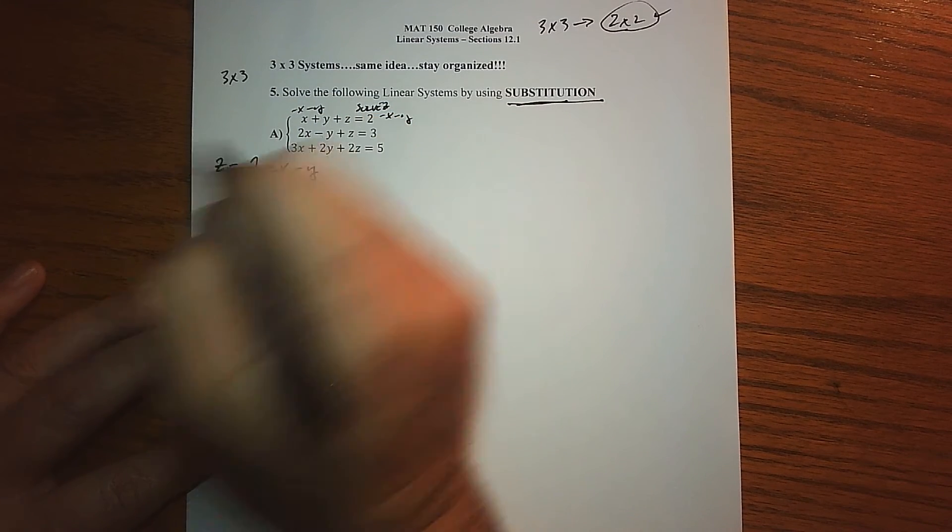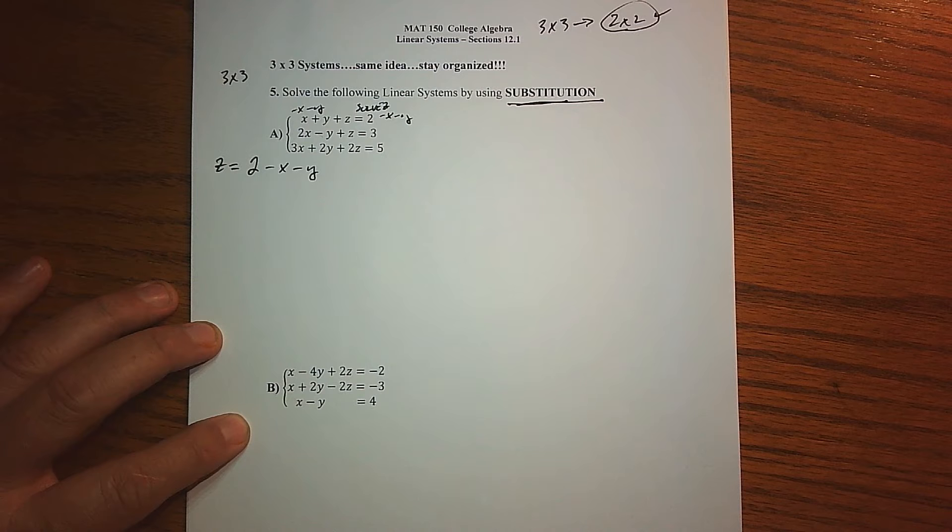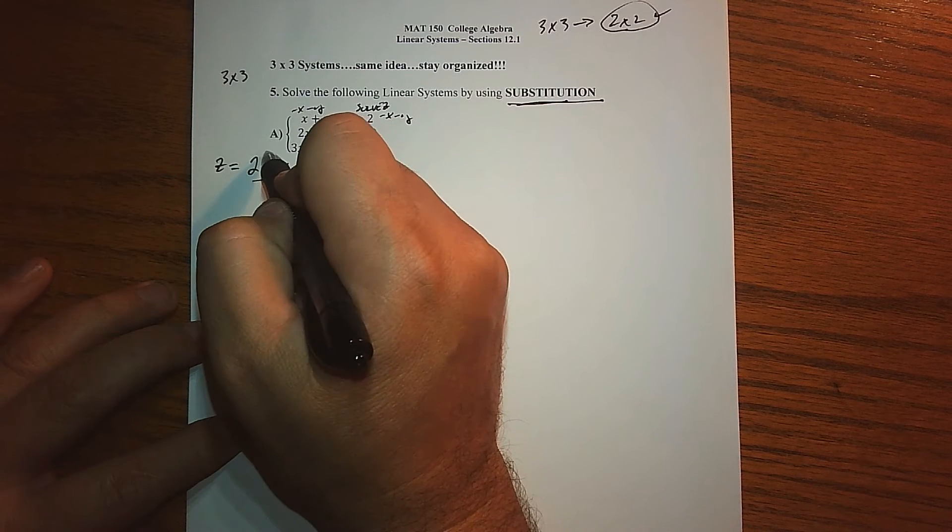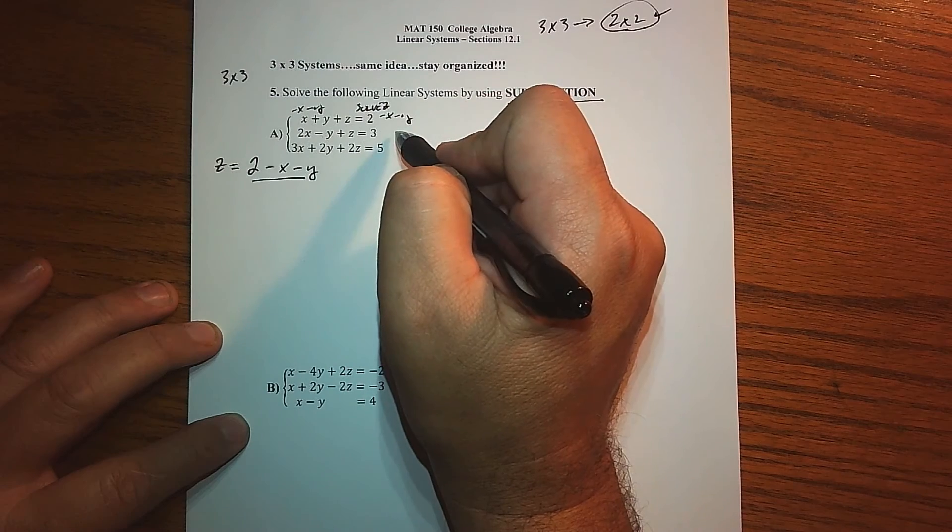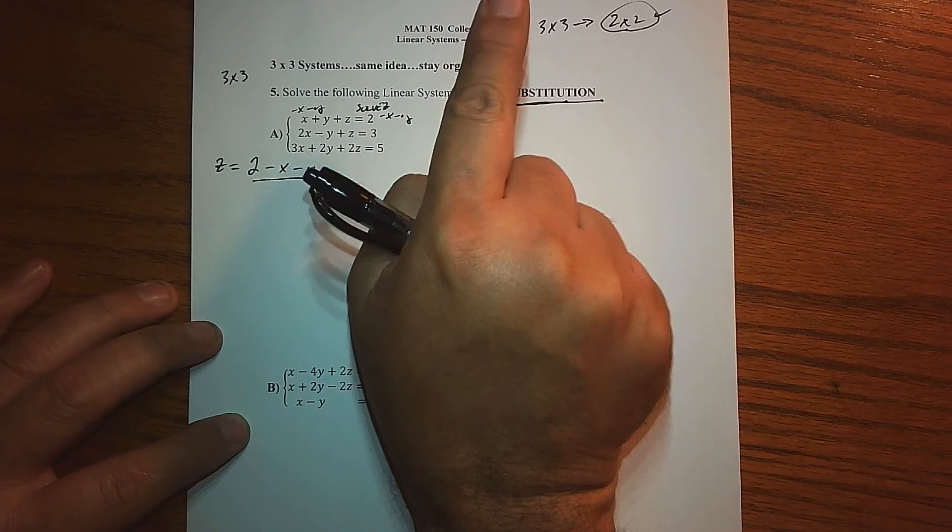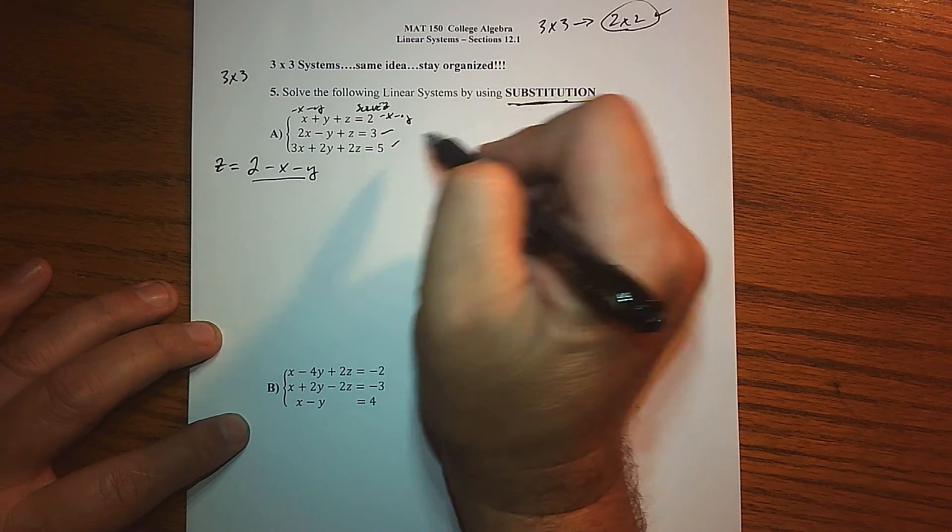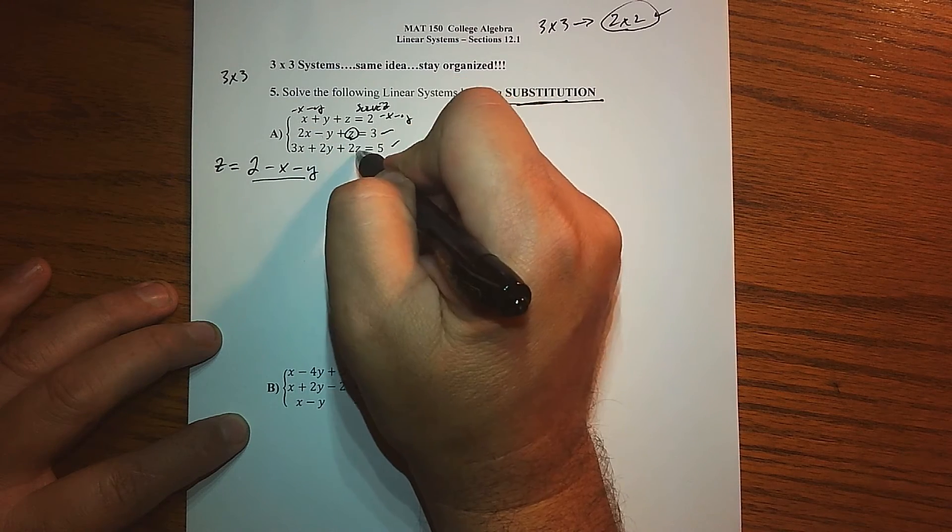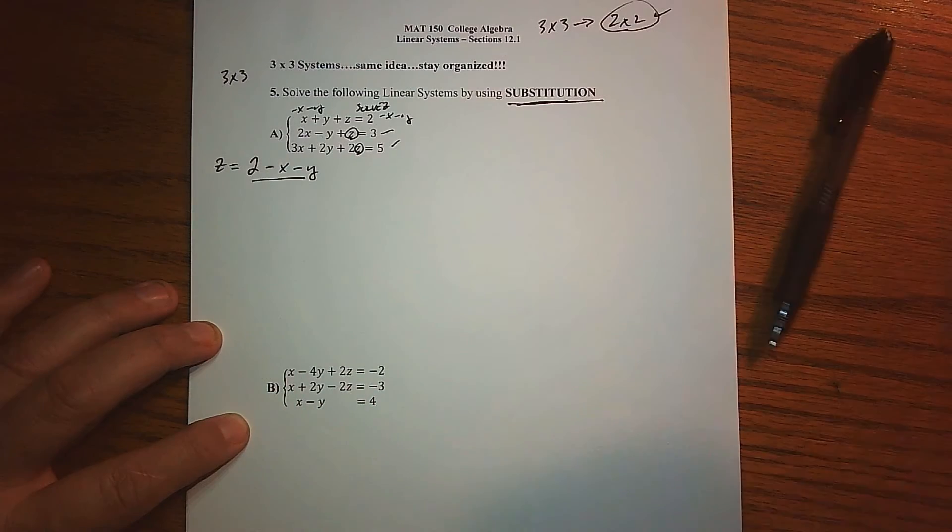The next step is we take that and substitute it into the other equations. When it was a two by two system, there was only one other equation to sub it in, but we actually have two. So I'm going to take that Z and replace it with this.